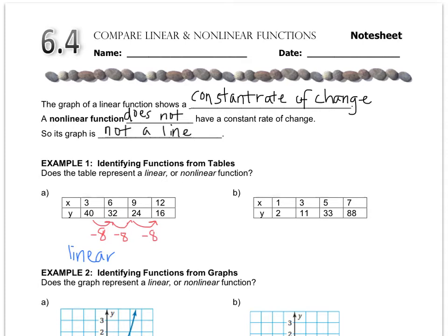Example B, the ratio or the relationship here is plus 9, then it's plus 22, and that's plus 55. And as soon as you recognize that it's not being added or subtracted by the same number every time, then you write that it is not linear.